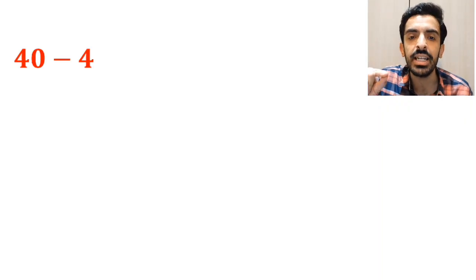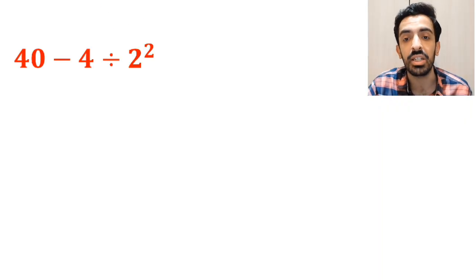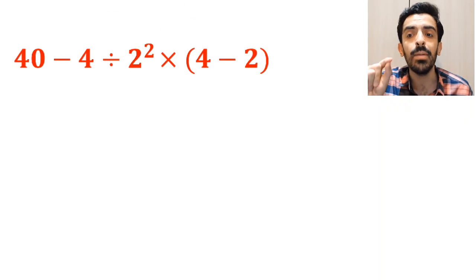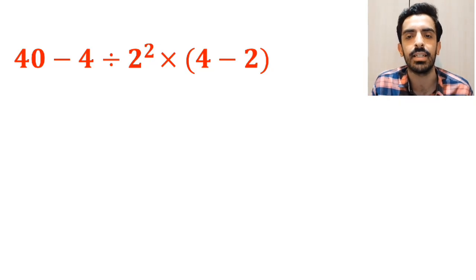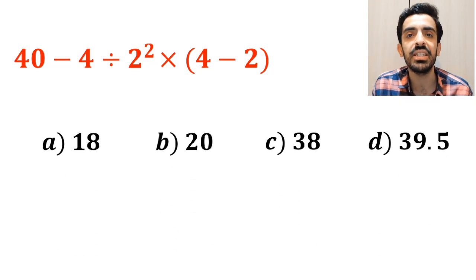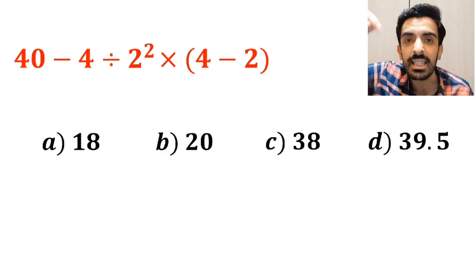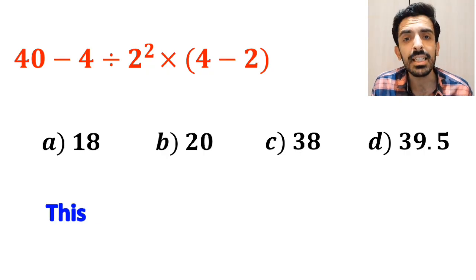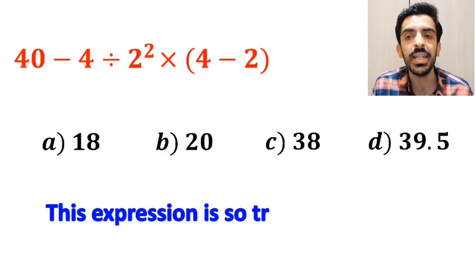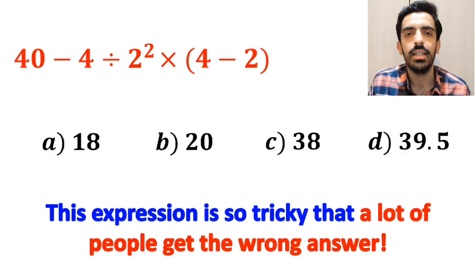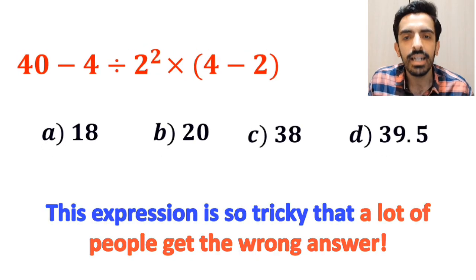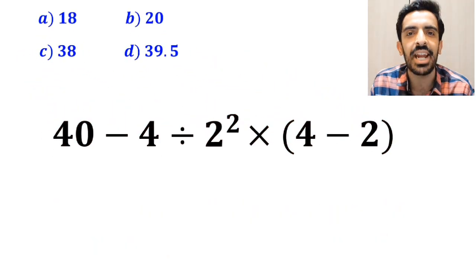What is the value of the expression 40 minus 4 divided by 2 squared, then multiplied by open parenthesis 4 minus 2 close parenthesis? Which option do you think is the correct answer to this question? This expression is so tricky that a lot of people get the wrong answer. Let's go step by step and solve it together.